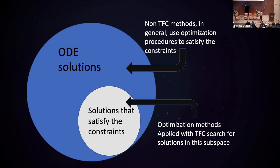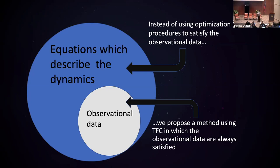I will explain an application of this framework to obtain solutions of ordinary differential equations. Here the large blue circle represents all the possible solutions of a given ordinary differential equation. The smaller white circle represents the solutions that satisfy both the constraints and the differential equation. The Theory of Functional Connections embeds the constraints into the equations, so we look for solutions in this subspace — all possible solutions will always satisfy the constraints.